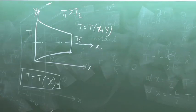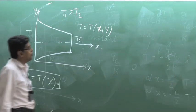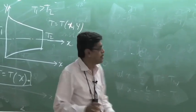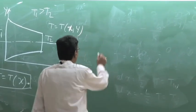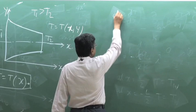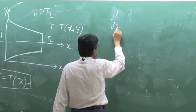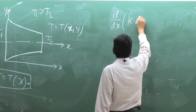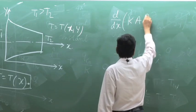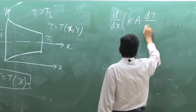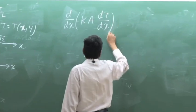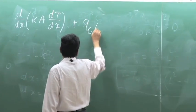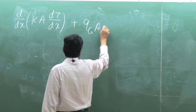However, we cannot neglect the variation of area. Therefore, we cannot write the equation d²T/dx² = 0, because we know the equation takes a different form. The general equation is: d/dx of (K·A·dT/dx) plus Q_g·A equals 0.